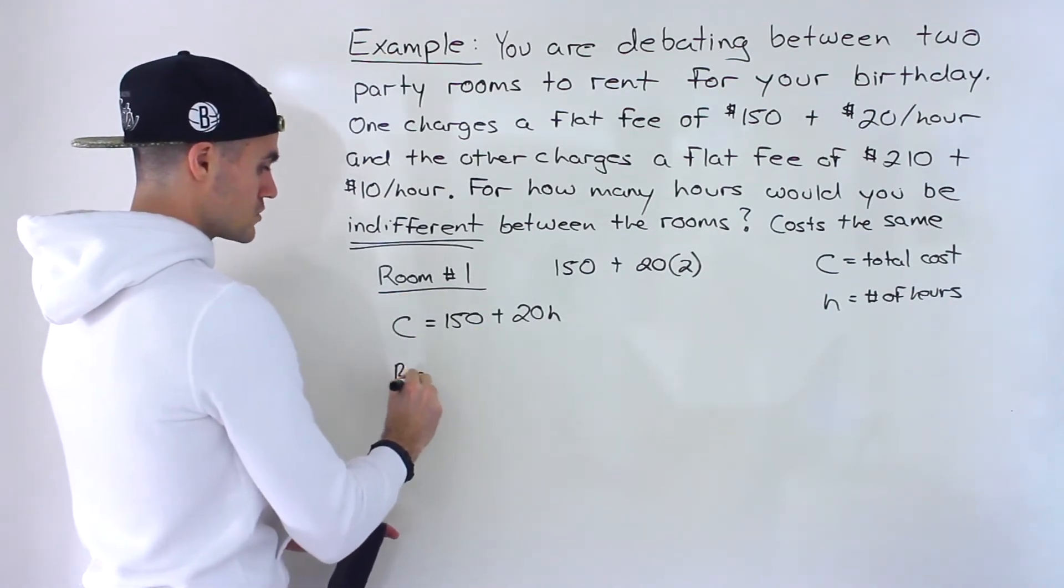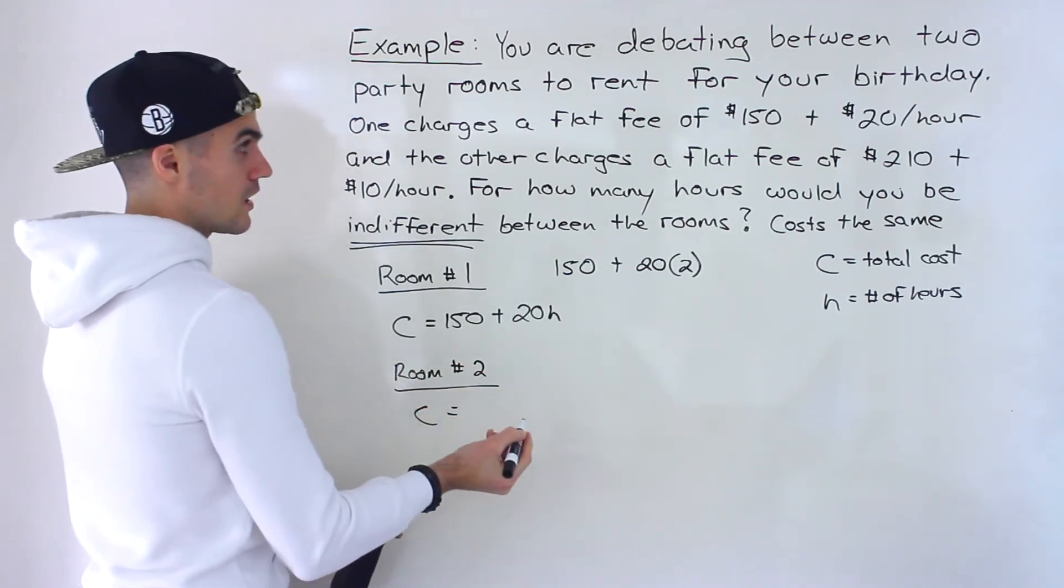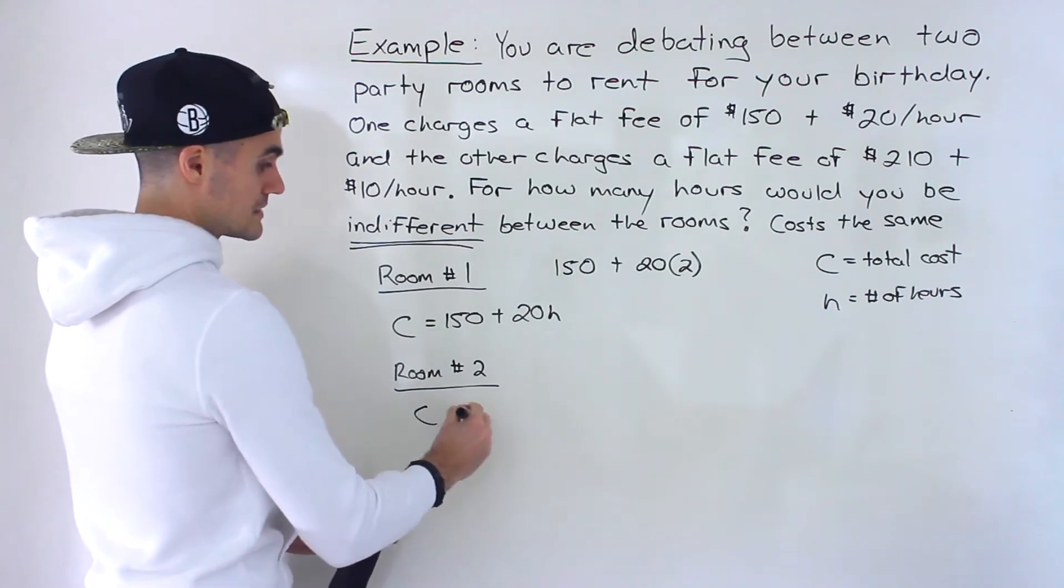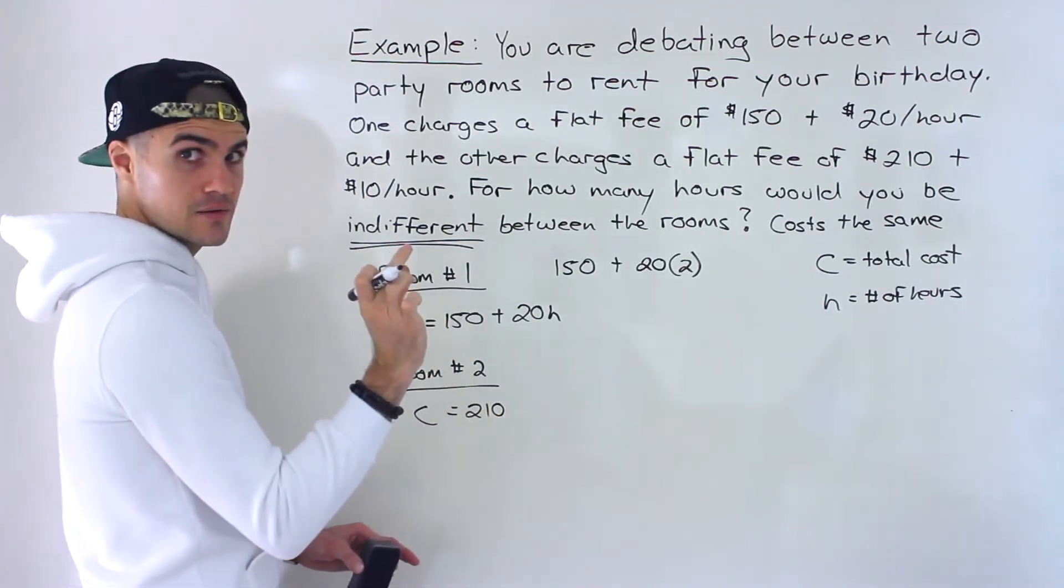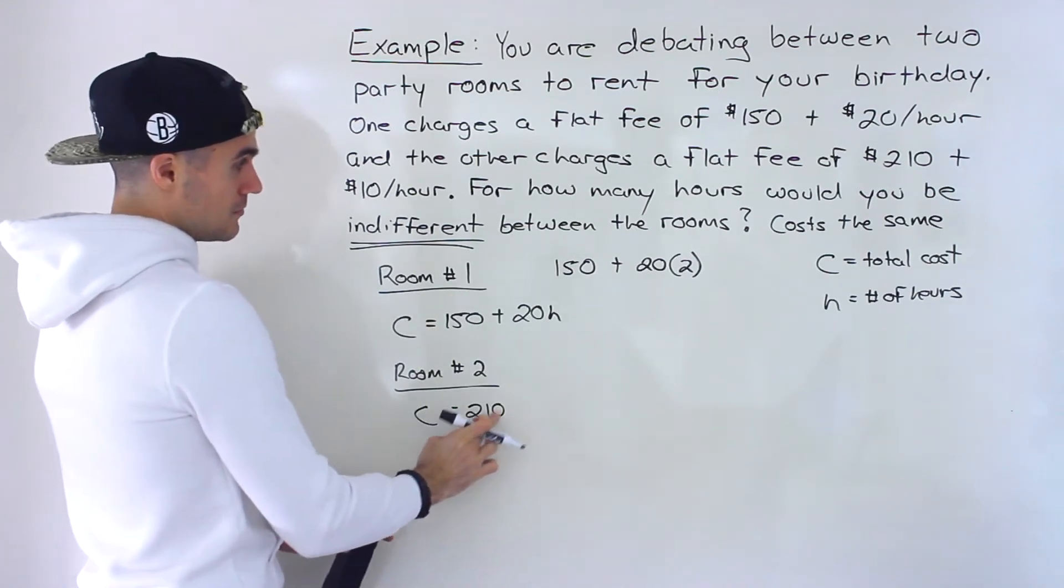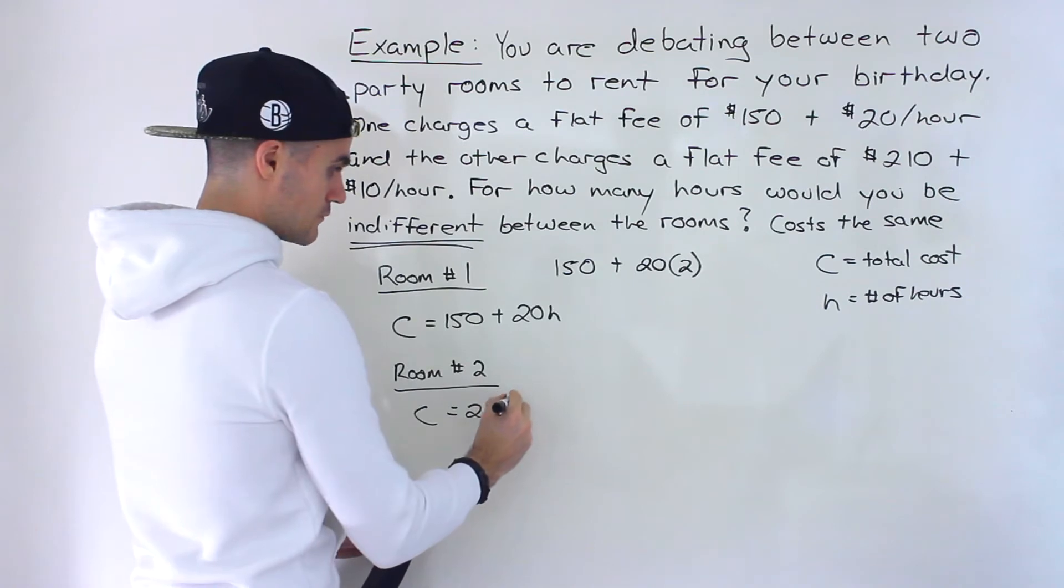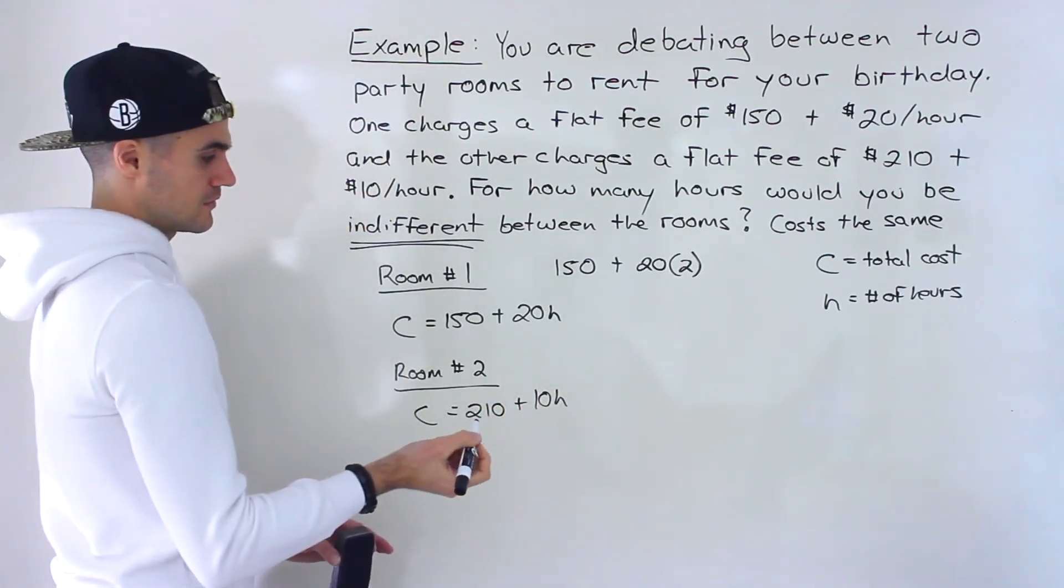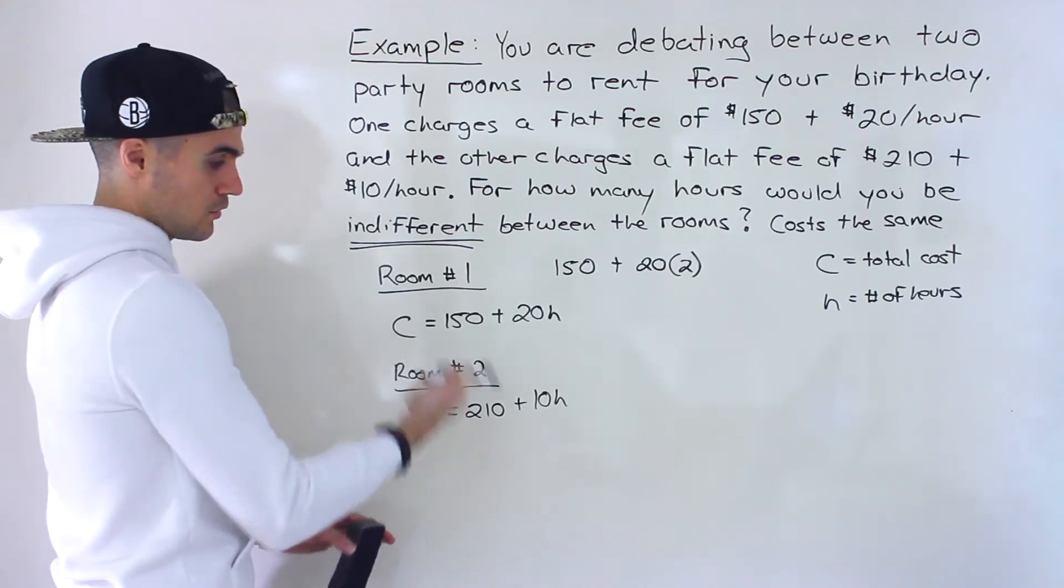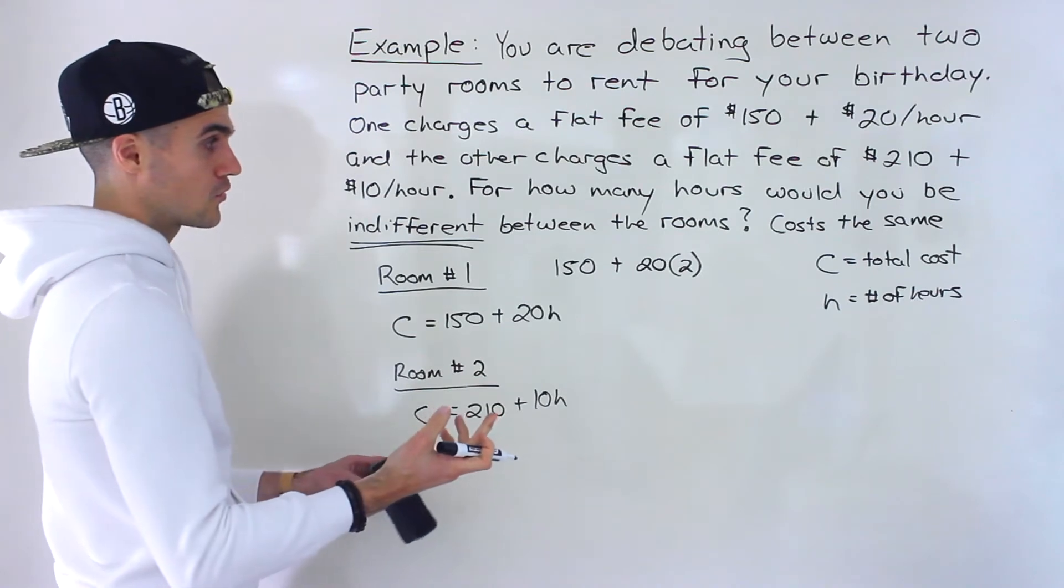For room number two, what's the cost going to be? The cost is going to be a flat fee of $210. So notice that the flat fee, the fixed fee is higher, but then the variable fee, the $10 per hour is lower. So then we'll have plus 10h. Those are both the equations for the costs of both rooms.